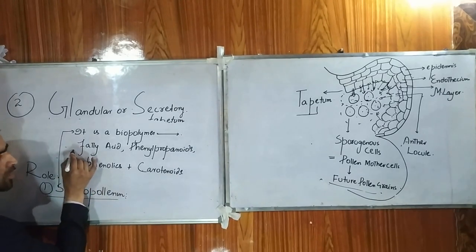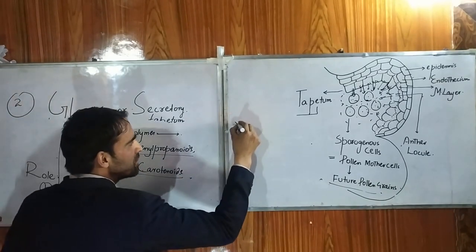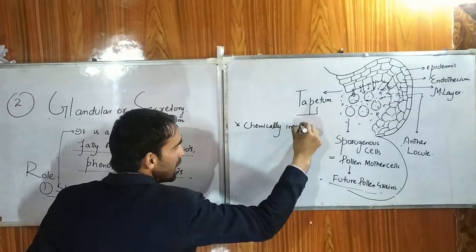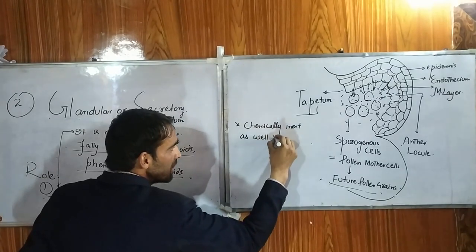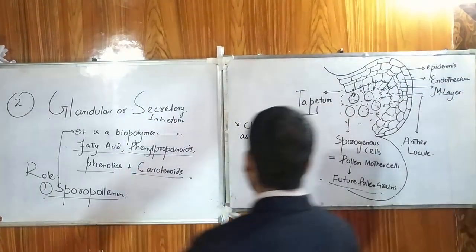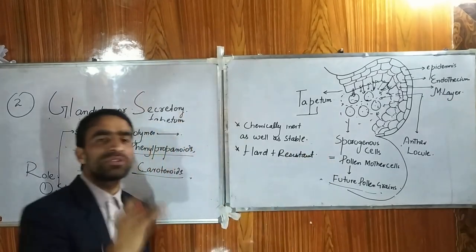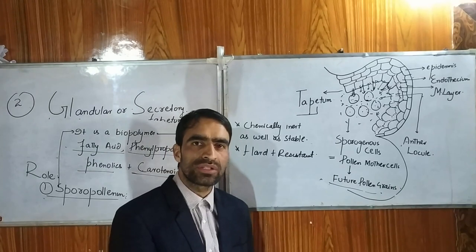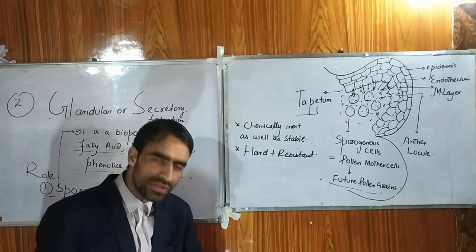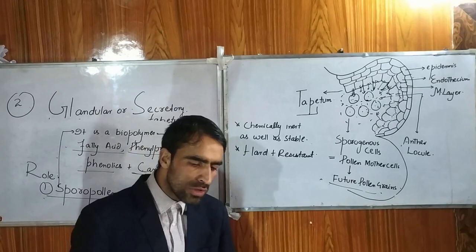Sporopollenin is composed of fatty acids, phenylpropanoids, phenolics, and carotenoids. Most importantly, remember: it is regarded as one of the chemically inert substances of nature. It is chemically inert as well as one of the most stable biopolymers on planet Earth. It is very hard and very resistant — resistant to enzyme attack and microbial attack as well.